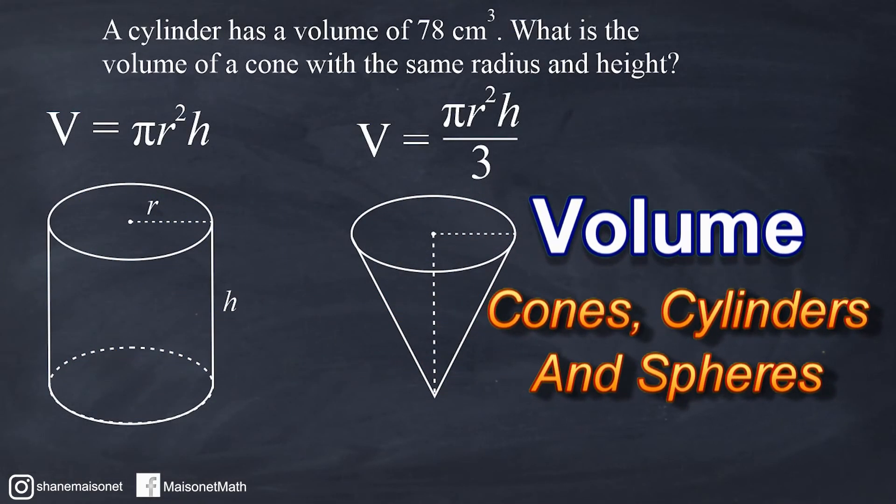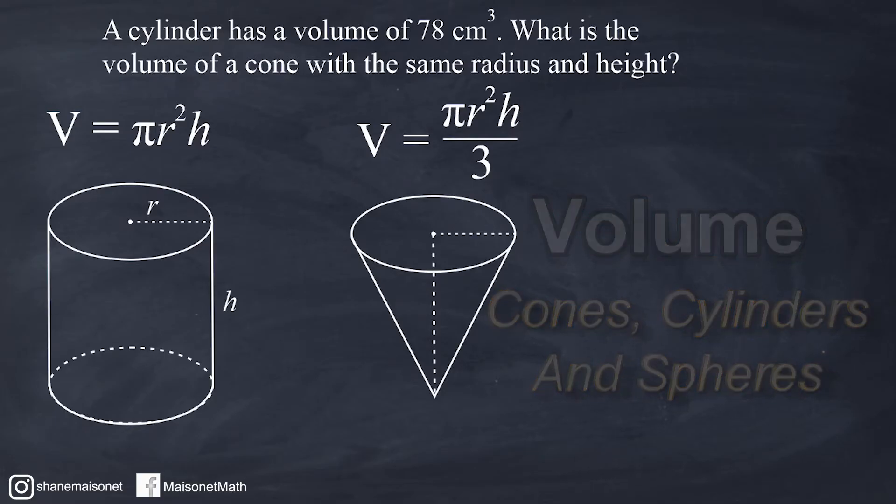Hey, this is Mr. Maisonette and what we're going to do in this tutorial is practice working with the volume of different geometric solids. This first problem reads that a cylinder has a volume of 78 cubic centimeters. What is the volume of a cone with the same radius and height?